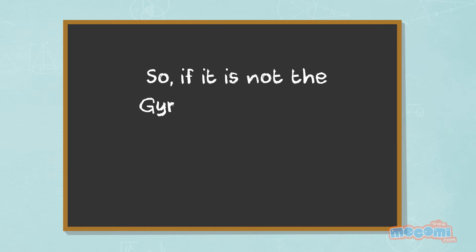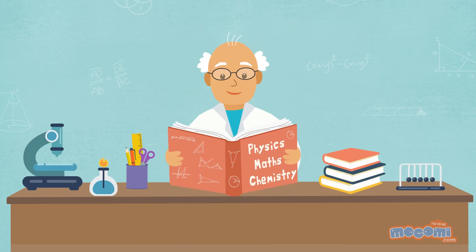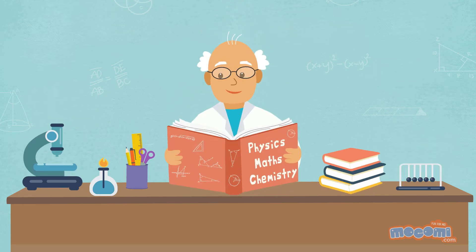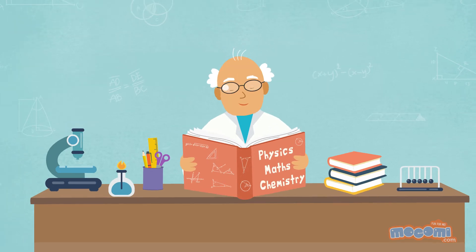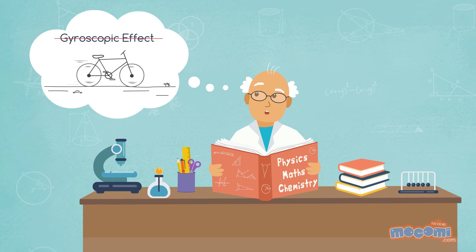So if it is not the gyroscopic effect, what actually keeps the bicycle upright? The scientists who study bicycles experimented a bit more to discover that if the gyroscopic effect were to be cancelled, the bicycle would continue to be upright.